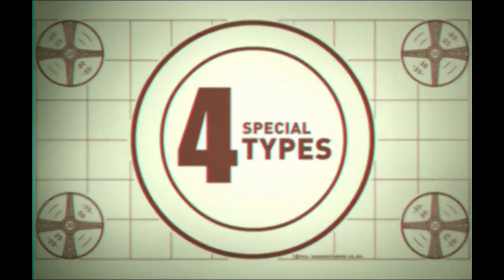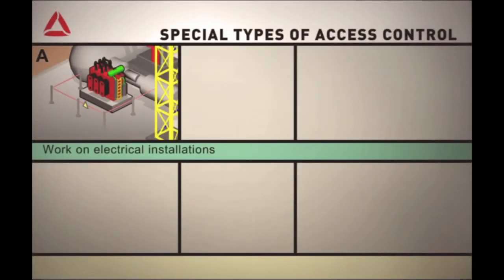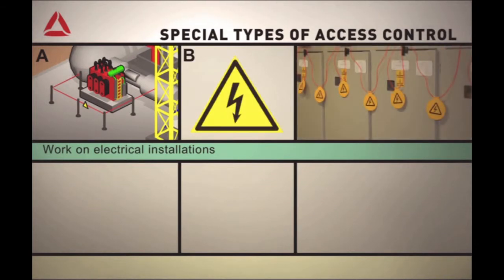Some types of work require special access control measures. If you are carrying out work on an electrical installation, the area must be cordoned off using red webbing and a round yellow and black sign showing zigzag lightning.